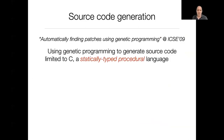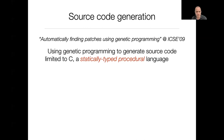Source code generation has been the topic of an ICSI paper in 2009 titled 'Automatically Finding Patches Using Genetic Programming.' This paper uses genetic programming to generate source code to fix bugs, and all experiments were conducted using the C programming language.